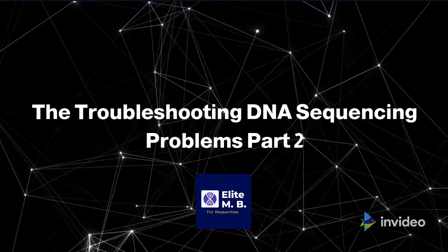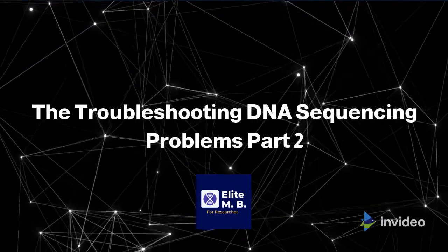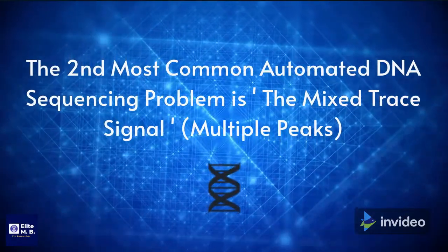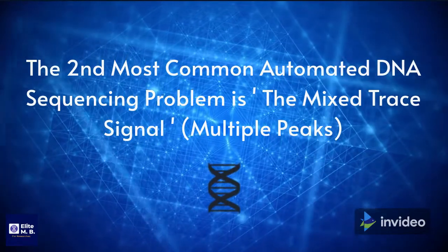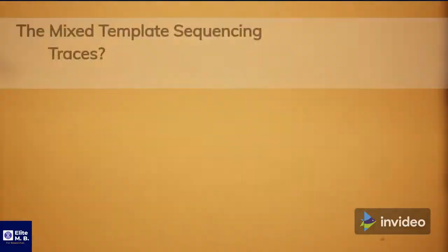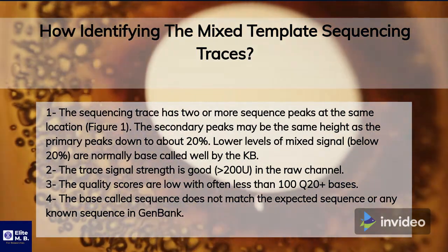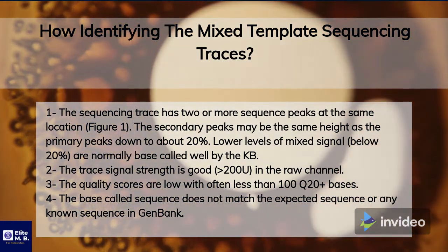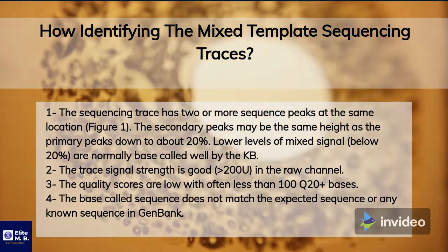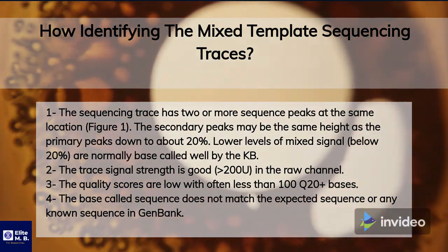Troubleshooting DNA sequencing problems: the second most common automated DNA sequencing problem is the mixed trace signal, or multiple peaks. When identifying mixed template sequencing traces, the sequencing trace has two or more sequence peaks at the same location. The secondary peaks may be the same height as the primary peaks, down to about 20%.